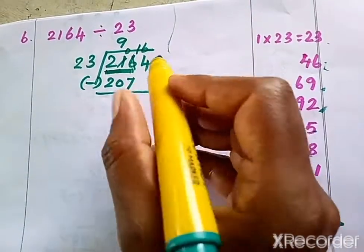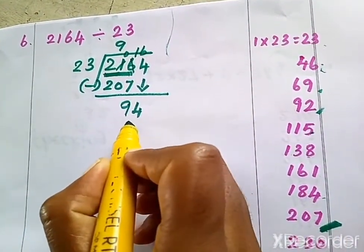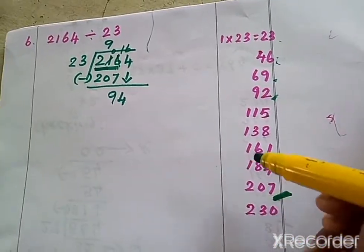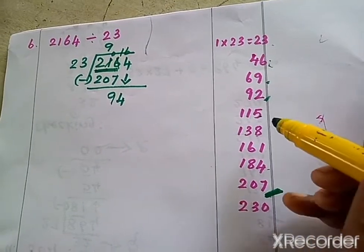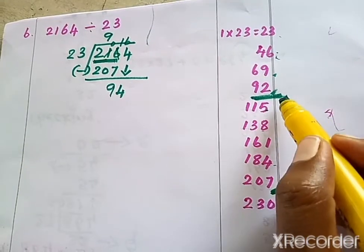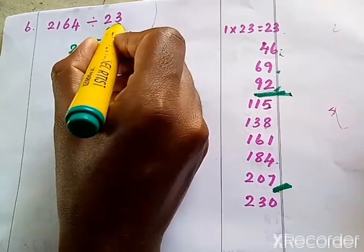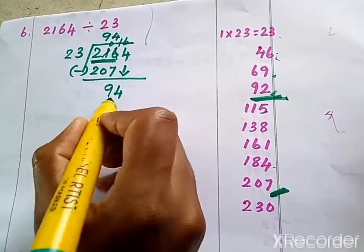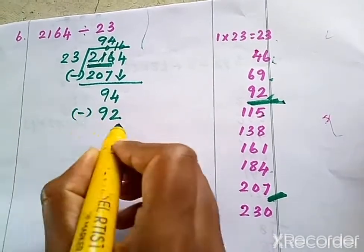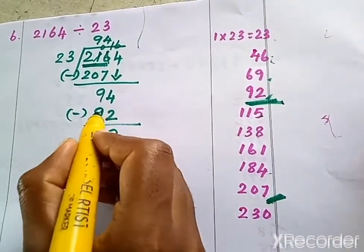9 is smaller than 23, so we bring the next digit down — that is 4 — making it 94. We check whether 94 is in the 23 times table; it's not, so we find the nearest number less than 94, which is 92. 4 into 23 is 92, so we write 4 as the quotient. Subtracting: 4 minus 2 is 2, and 9 minus 9 is 0.